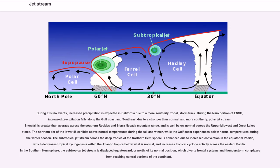During El Niño events, increased precipitation is expected in California due to a more southerly, zonal storm track. During the Niño portion of ENSO, increased precipitation falls along the Gulf Coast and southeast due to a stronger-than-normal and more southerly polar jet stream. Snowfall is greater than average across the southern Rockies and Sierra Nevada mountain range, and is well below normal across the upper Midwest and Great Lakes states. The northern tier of the lower 48 exhibits above normal temperatures during the fall and winter, while the Gulf Coast experiences below normal temperatures during the winter season. The subtropical jet stream across the deep tropics of the northern hemisphere is enhanced due to increased convection in the equatorial Pacific, which decreases tropical cyclogenesis within the Atlantic tropics below what is normal, and increases tropical cyclone activity across the eastern Pacific. In the southern hemisphere, the subtropical jet stream is displaced equatorward, or north, of its normal position, which diverts frontal systems and thunderstorm complexes from reaching central portions of the continent.